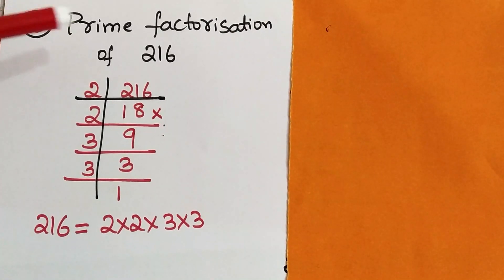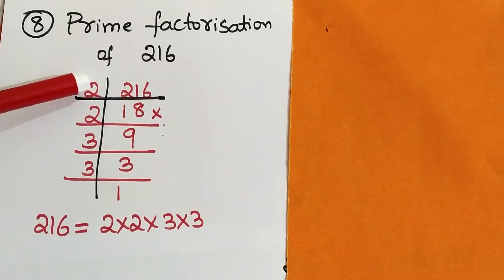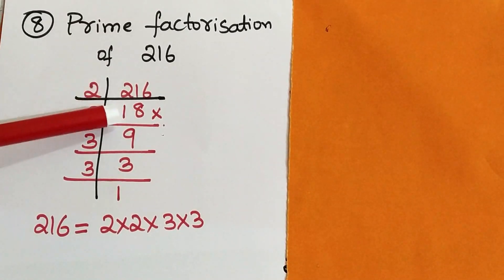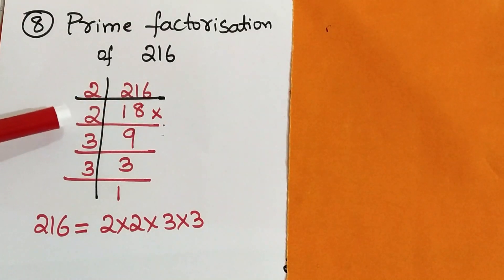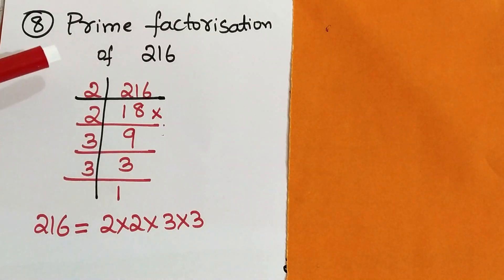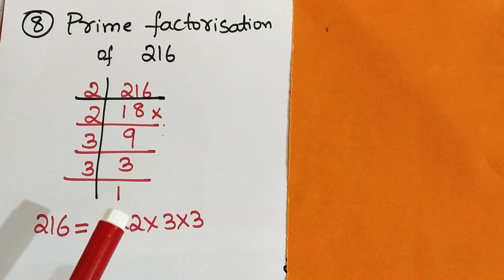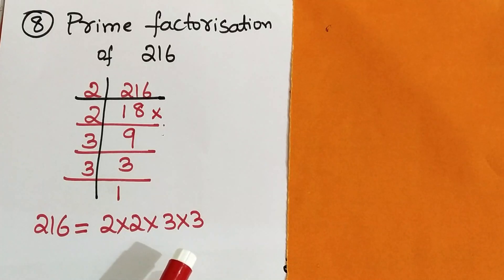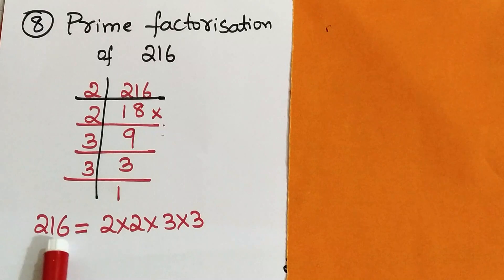We will see the prime factorization method for 216. 216 can be divided by 2. In the wrong procedure, students make a division error — writing 2 ones are 2, 2 eights are 16, 2 nines are 18, then 3 threes are 9, 3 ones are 3, identifying 2, 2, 3, 3 as prime factors. But multiplying these back: 2 times 2 is 4, 4 times 3 is 12, 12 times 3 is 36 — and 36 is not 216. So this is a wrong procedure.